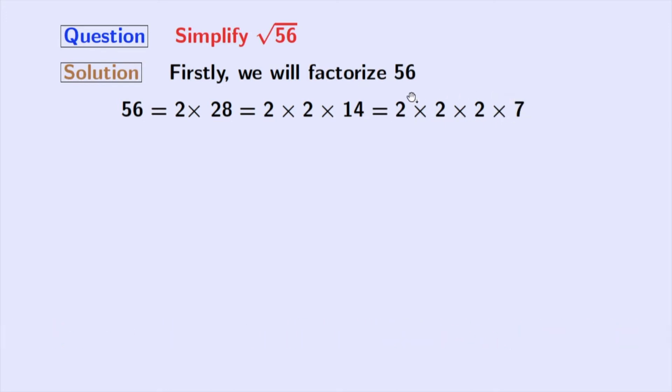Now, look that all these numbers are prime numbers, so we will not factorize further. Finally, we get 56 is equal to 2 times 2 times 2 times 7.